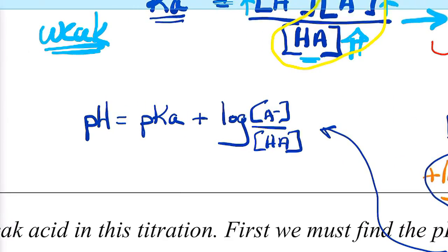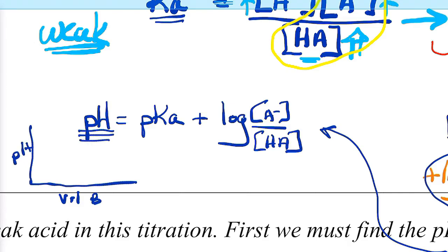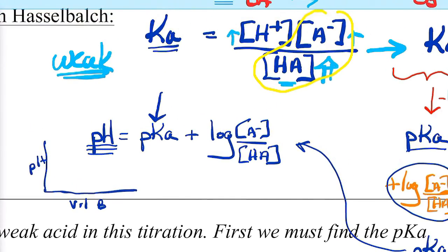Why do we care about this? We've been plotting volume of base versus pH in our titrations. We can relate the pH measured by our temperature probes as we titrate an acid, and we can actually get the pKa from the curve. If we can get the pKa, we go backwards — Ka equals 10 to the negative pKa — and we can determine the Ka and decide how strong our acid is from our lab results.